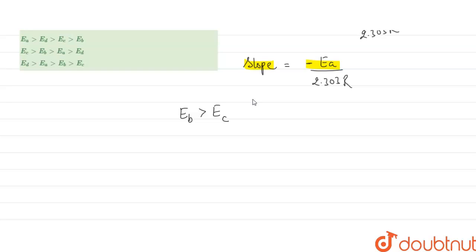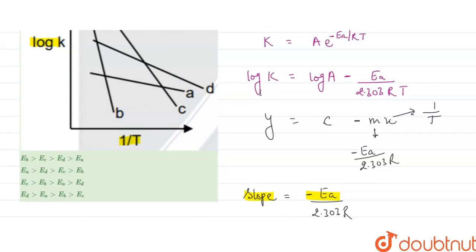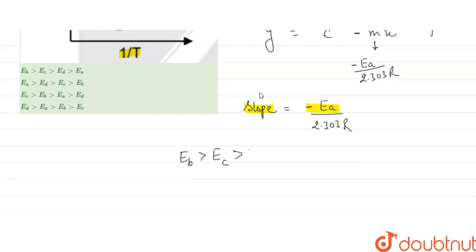After C, we can see the slope of D is less, so the activation energy in D will be high, and after that A will come.